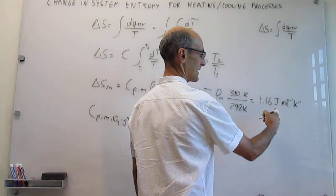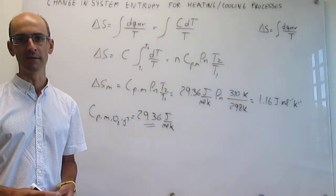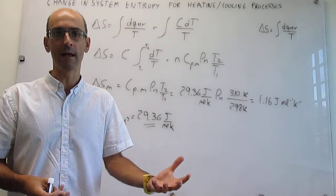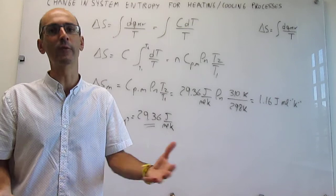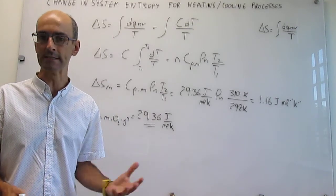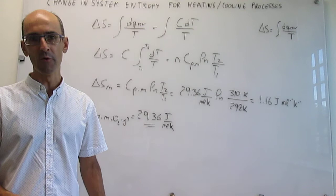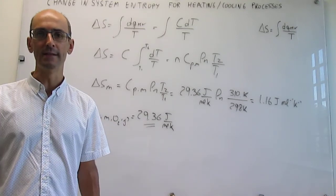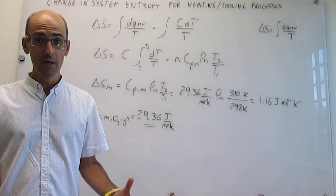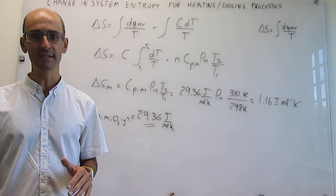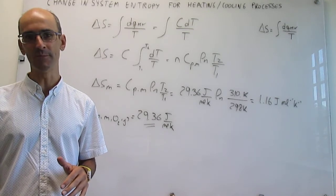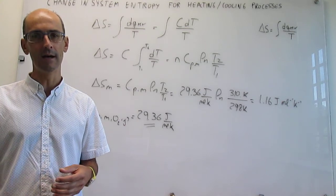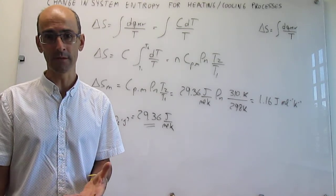This is a molar change in entropy, calculated on a per-mole basis. With this number, you could then calculate what happens when you have, say, 3 grams or 7.2 moles of oxygen — you just multiply the molar entropy change by the number of moles to get the total change in entropy for the specific amount you're interested in.